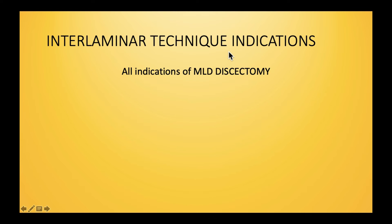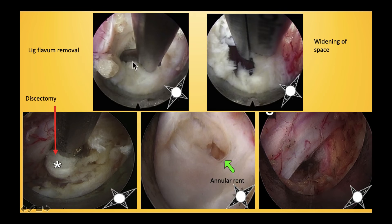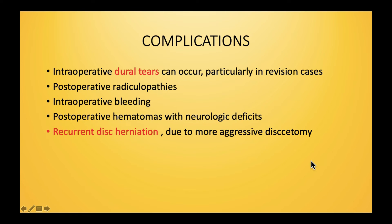In the interlaminar technique, the endoscope is passed in the midline area of the spine, and all indications for microlumbar discectomy are possible. A needle or dilator is placed and a 5 to 10 mm incision is made, depending on whether a thin or thick endoscope — also called a stenoscope — is used. The space is dilated, reaching the laminar window for tissue clearance, ligamentum flavum removal, and disc fragment removal. Complications specific to this approach include more frequent dural tears and recurrent disc herniation.